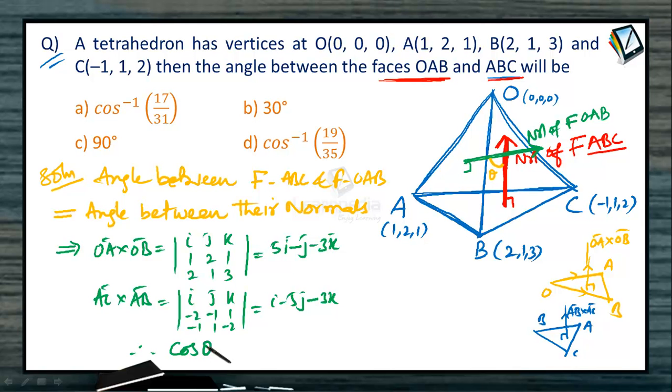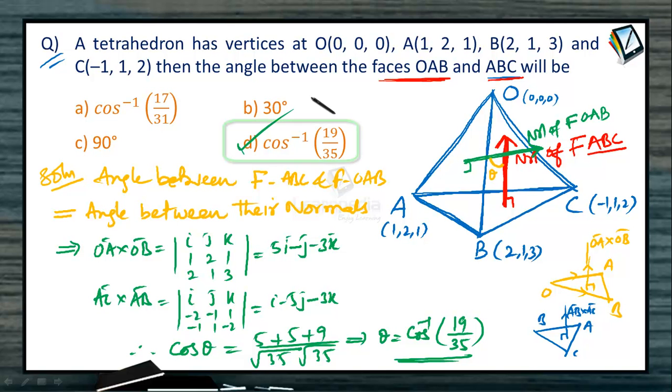Therefore, the angle between the normals, cos θ equals A dot B. That is 5 times 1 plus 5 plus 9, divided by root 35 times root 35. Therefore, θ equals cos inverse of 19 by 35, which is the angle between the two normals. The angle between the faces is also the same. Hence, option D is the correct option for this question.